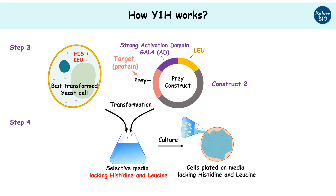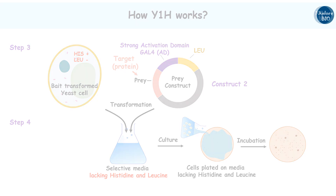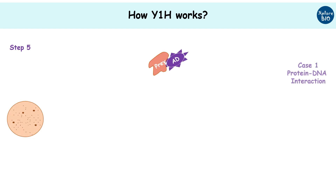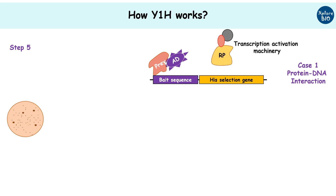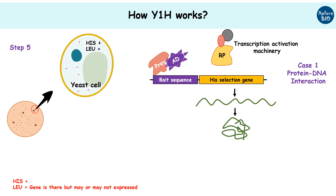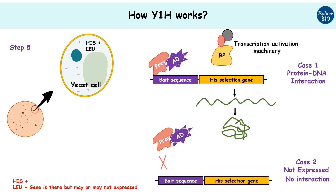The culture is allowed to grow. Now comes the detection part. If the prey protein interacts with the bait sequence of the reporter gene, it recruits the transcription machinery and transcription of the reporter gene will follow, as seen by positive colony growth. If the protein does not interact with the bait sequence, the transcription machinery is not recruited and the reporter gene will not be expressed, and hence no colony will appear.